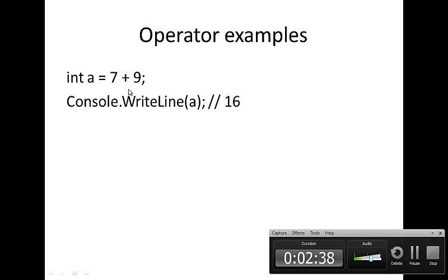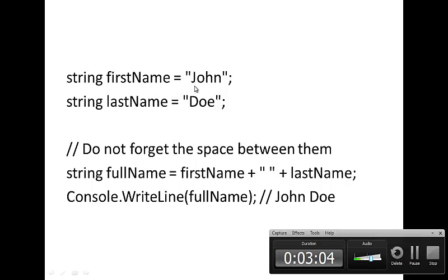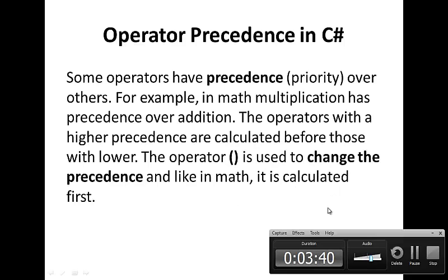Here's an example of operators in action. We have 7 plus 9, which adds just like in regular math, and we use the assignment operator to assign the sum to variable A, printing 16 to the screen. We also assign the string 'John' to variable first name, 'Do' to variable last name, and then string full name equals first name plus a space plus last name — using the concatenation operator — giving us 'John Do' printed to the screen.